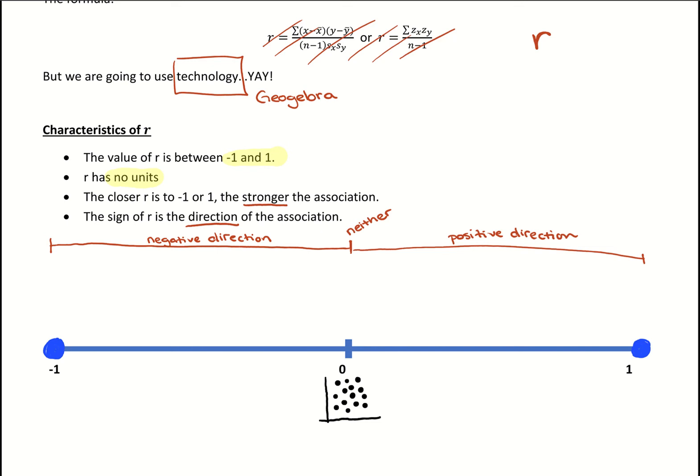This location on the number line tells us about strength. When is it a strong correlation and when is it weak? We're going to use dividing points at 0.5 and 0.8. Some resources will be a little different, but we'll look at 0.5 and 0.8, as well as negative 0.5 and negative 0.8.